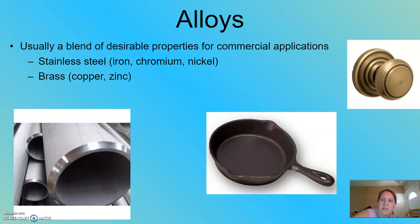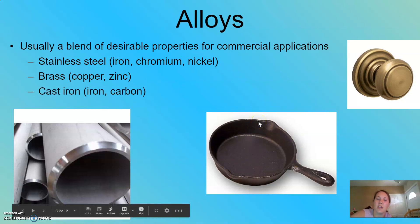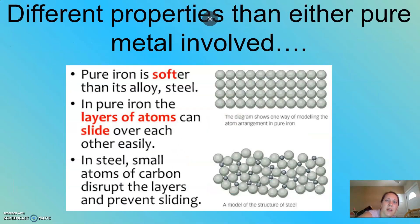Then we get things like brass. Brass is made of copper and zinc. And has different properties than copper or zinc themselves. Cast iron, like you see here, this cast iron skillet is a combination of iron and carbon put together. And that is considered an alloy as well.